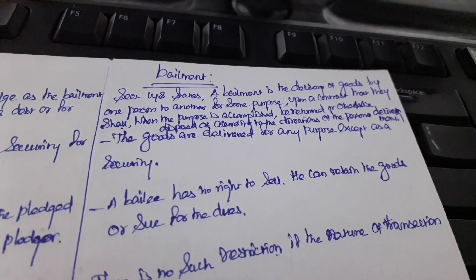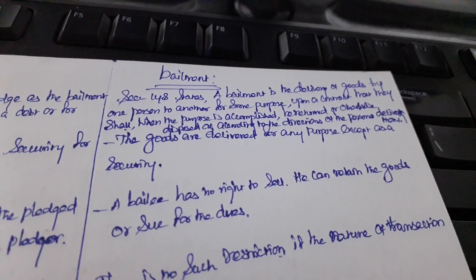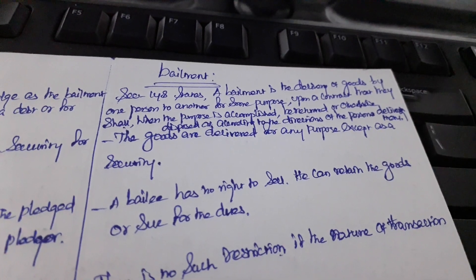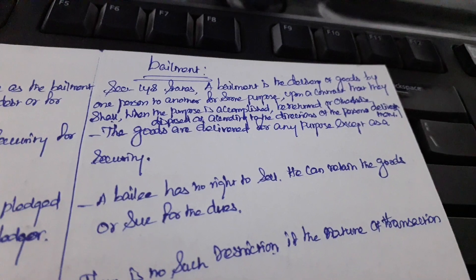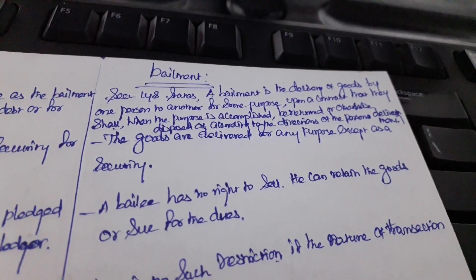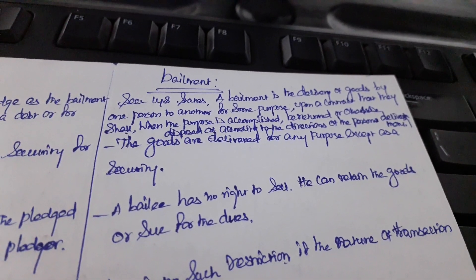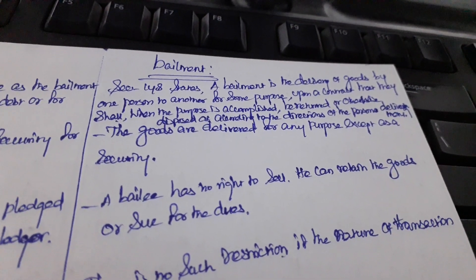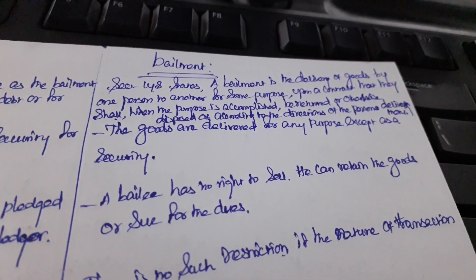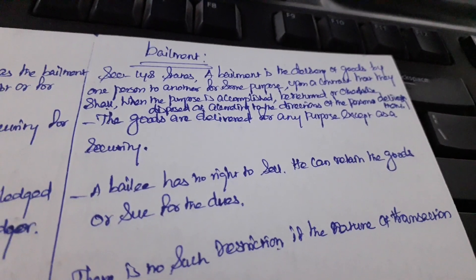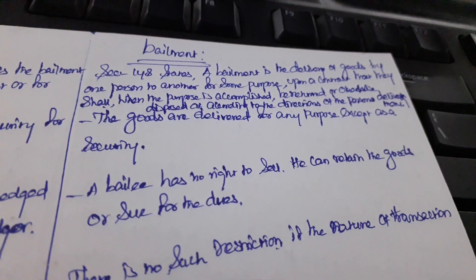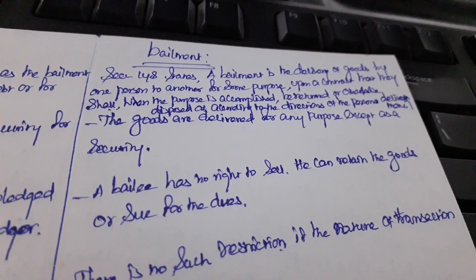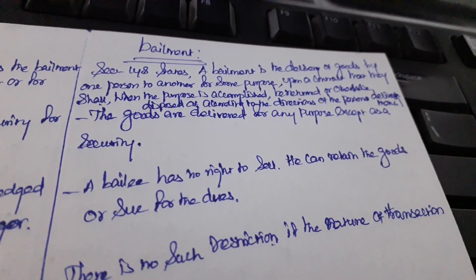Section 148 states: Bailment is the delivery of goods by one person to another for some purpose, upon a contract that they shall, when the purpose is accomplished, be returned or otherwise disposed of according to the directions of the person who delivered them. It defines bailment as the delivery of goods from one person to another for a specific purpose, and at that time a contract will be made between them.